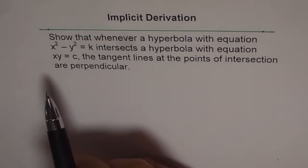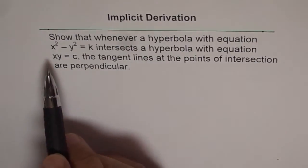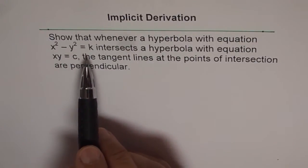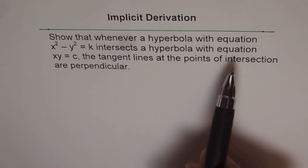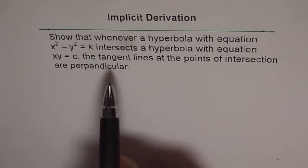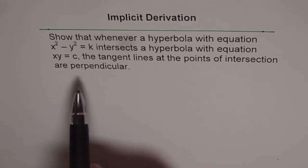The question here is: show that whenever a hyperbola with equation x square minus y square equals k intersects a hyperbola with equation xy equals c, the tangent lines at the points of intersection are perpendicular.